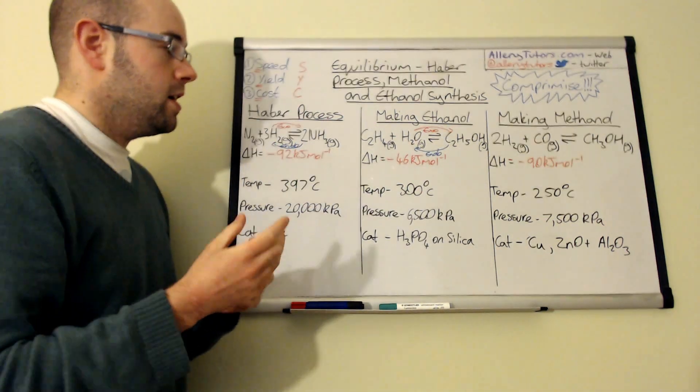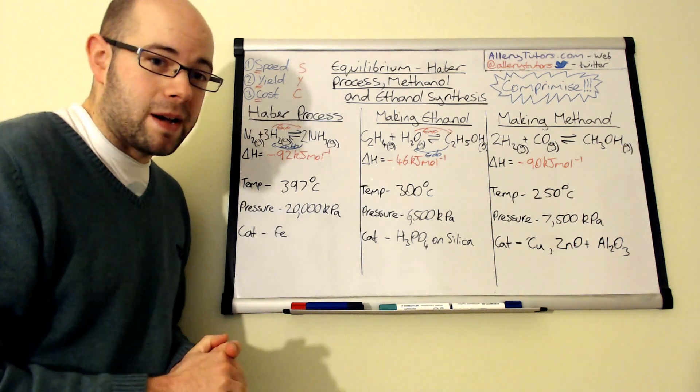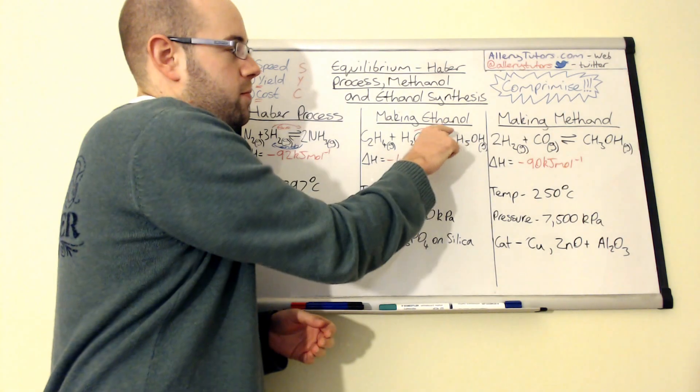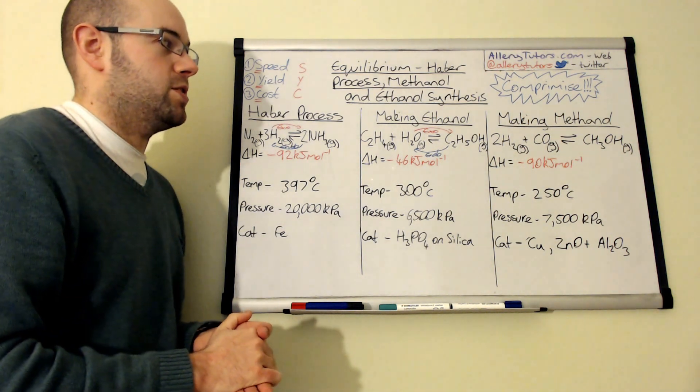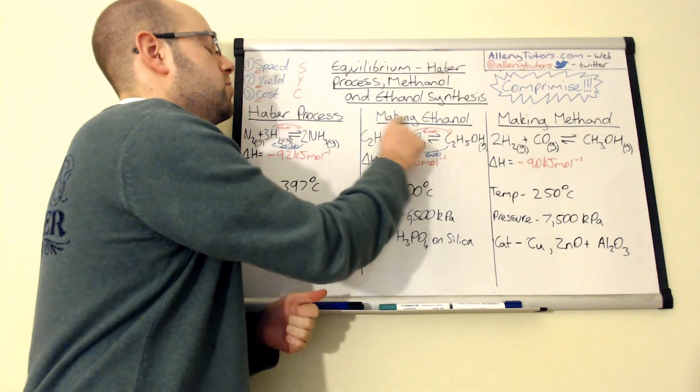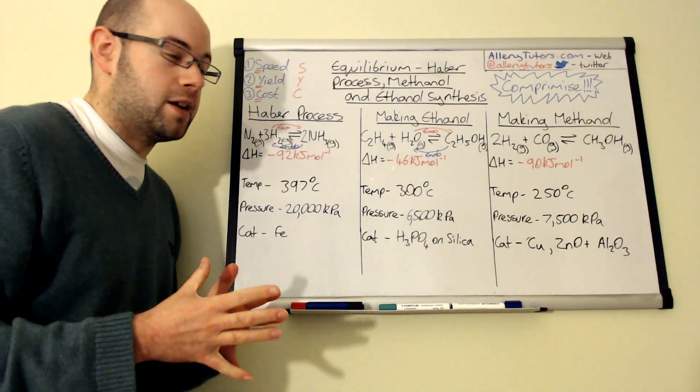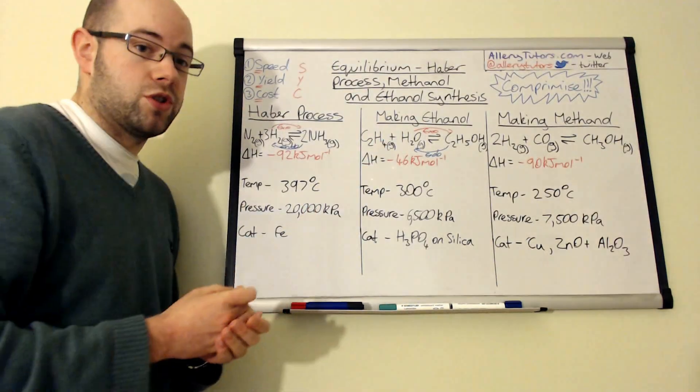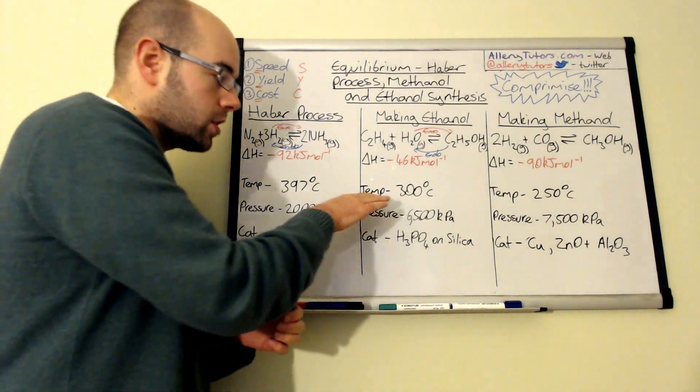This is the same as the Haber process over there. We have the same dilemma: if we increase the temperature of this reaction to produce it as quickly as possible, equilibrium will shift to the left because increasing the temperature, Le Chatelier's principle says it will do the opposite, which means it will try and reduce the temperature and cool it down, shifting in the endothermic direction. You produce more reactants than products, which is not a good thing if you want to make ethanol. But if you decrease the temperature too much, you'll produce more product but it'll take ages because the rate will drop.